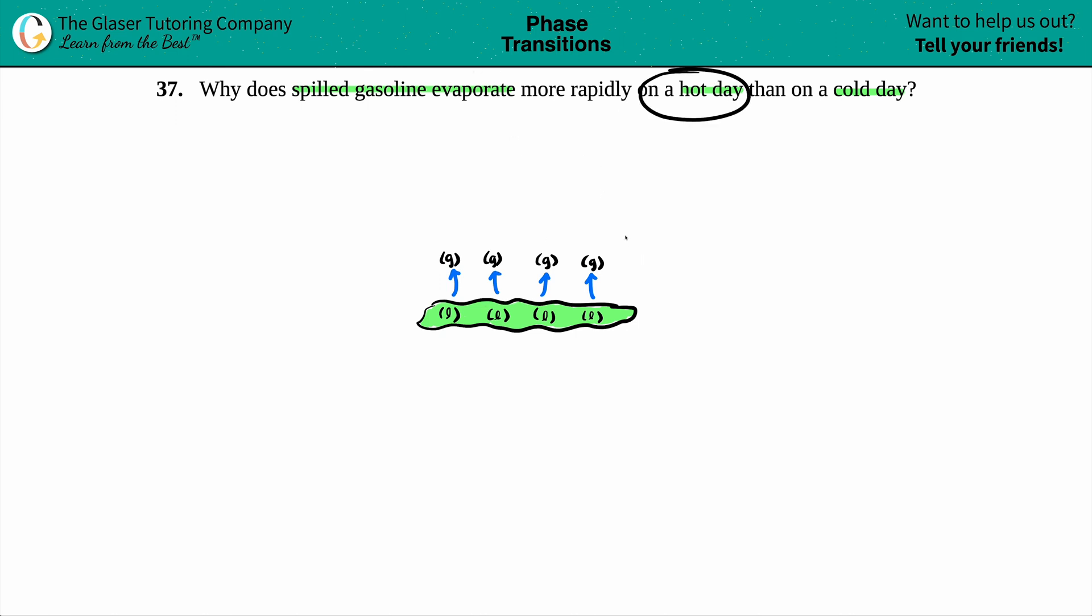But now why does this evaporation happen on a hot day more rapidly than a cold day? Well, on a hot day, what's going on with the temperature? The temperature is increasing, it's getting hotter. And as you're increasing the temperature, that means that your kinetic energy is increasing. So with higher temperatures comes more heat and more motion because you have more kinetic energy.